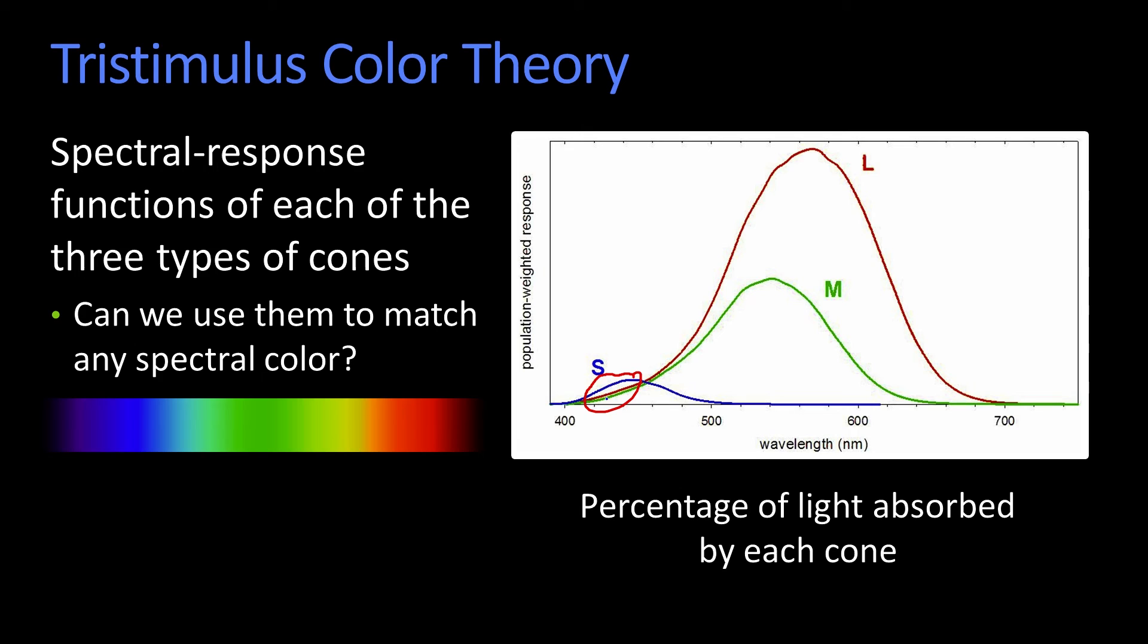And what I mean by spectral color is, you're all familiar with this: red, orange, yellow, green, blue, indigo, violet. You probably learned that somewhere along the way, the colors in the rainbow.